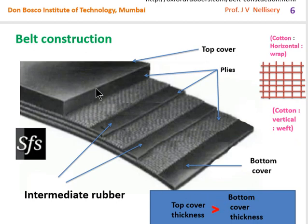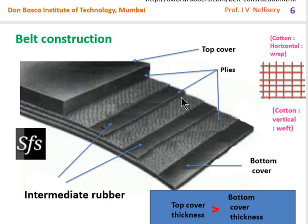In this figure, you can see the top cover and the bottom cover, both made of rubber. There is a mesh: one mesh, two mesh, and three mesh. Since three meshes are present in this conveyor belt cross-section, we call it a three-ply conveyor belt. Between them are intermediate rubber parts. The mesh consists of horizontal lines called warp (which may be cotton) and vertical lines called weft (also of cotton).